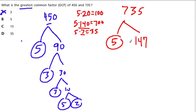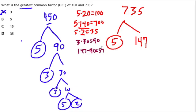Now, 147 is not friendly — it's not even. So I'm going to test some simple prime numbers to see if they go into 147. Let's try the number 3. Well, 3 times 30 is 90. So does 3 go into 147? 147 minus 90 equals 57, and 3 does go into 57. 3 times 19 is 57, so 19 threes make 57.